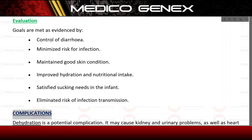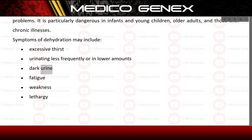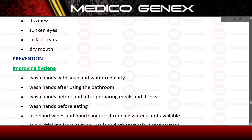Complications. Dehydration is a potential complication; it may cause kidney and urinary problems, as well as heart problems. It is particularly dangerous in infants and young children, older adults, and those with chronic illnesses. Symptoms of dehydration may include: excessive thirst, urinating less frequently or in lower amounts, dark urine, fatigue, weakness, lethargy, dizziness, sunken eyes, lack of tears, and dry mouth.